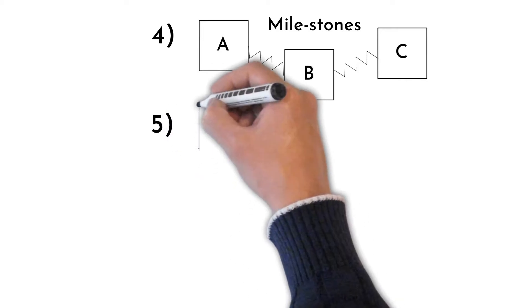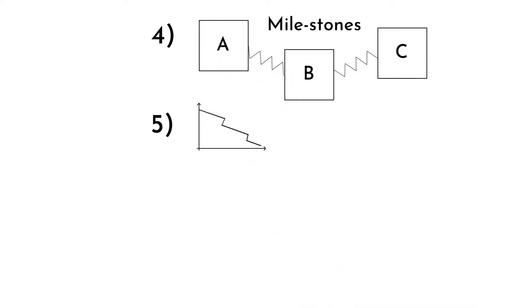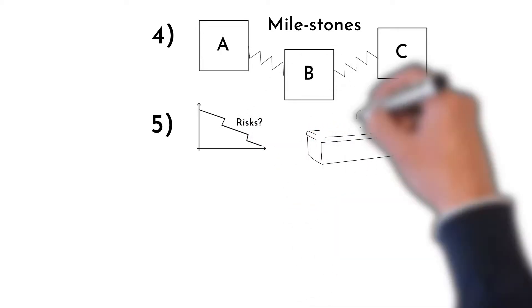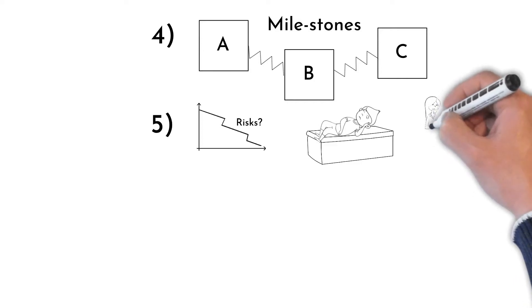In step number 5, evaluate risks and define reaction to them. Risk example: child will get sick. Your reaction might be, I will try to work while child is sleeping.